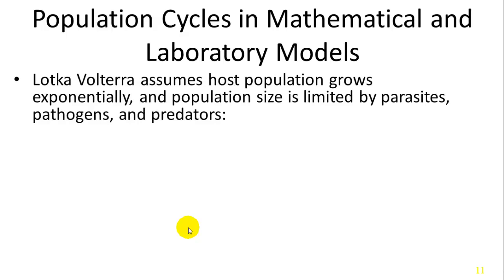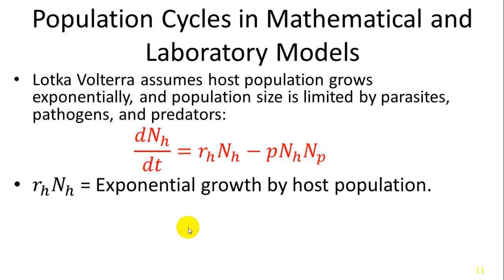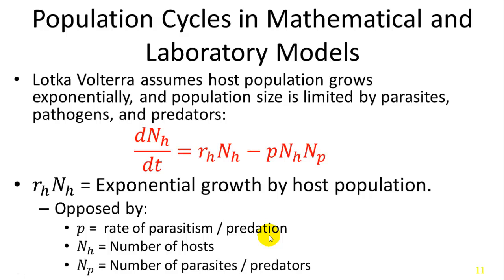When modeled in the laboratory, we have adjustments to our Lotka-Volterra. The model assumes the host population grows exponentially and population size is limited by parasites, pathogens, and predators. One variation uses the equation where R_h * N_h is the exponential growth by the host population, opposed by the rate of parasitism and predation — p times the number of hosts times the number of parasites and predators — keeping exponential growth in check.